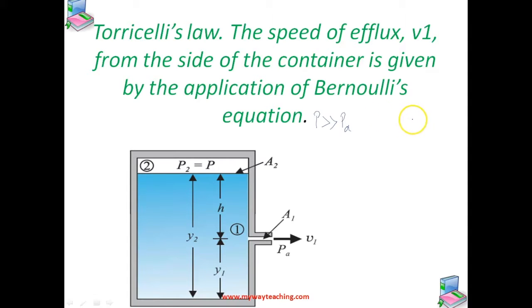On the other hand, if the tank is open to the atmosphere, we can say p equals pa. At that time, v1 equals square root of 2gh. This is the speed of a freely falling body, and this equation is known as Torricelli's law.